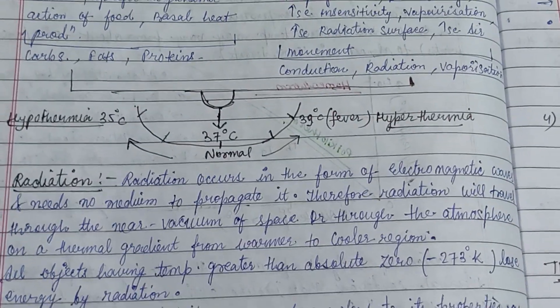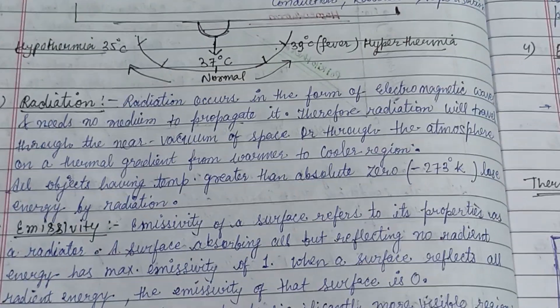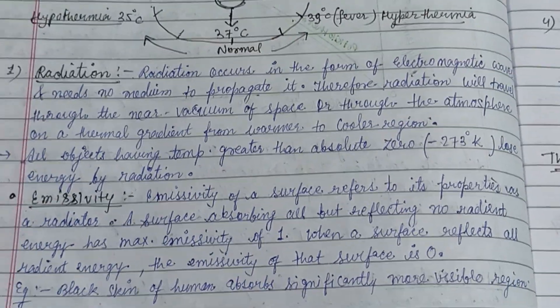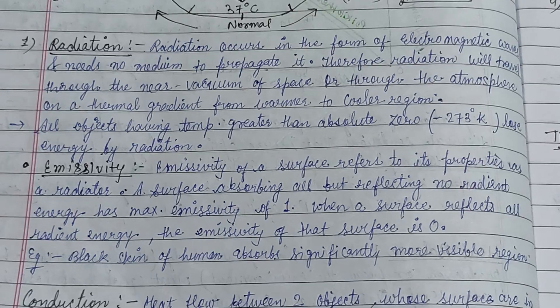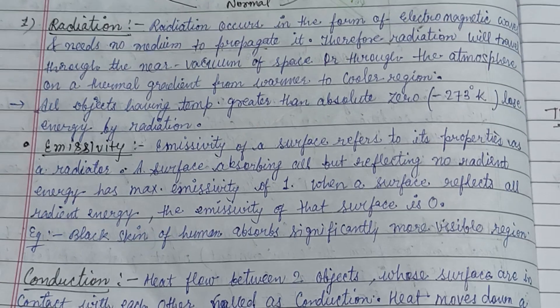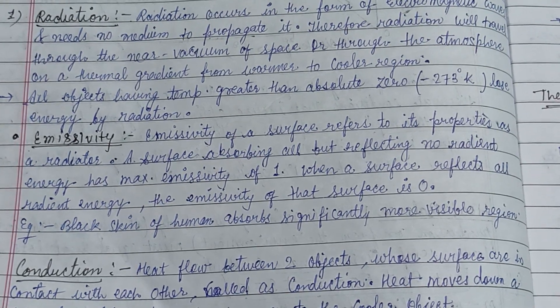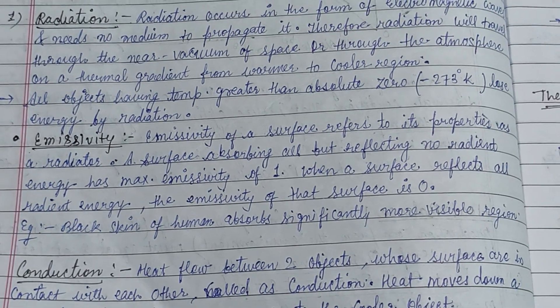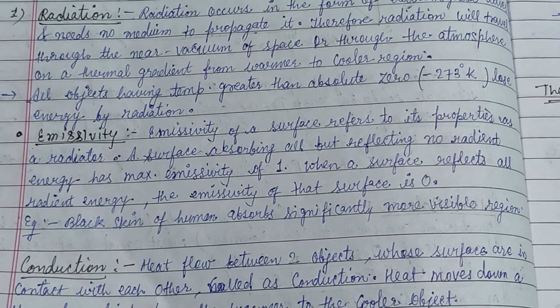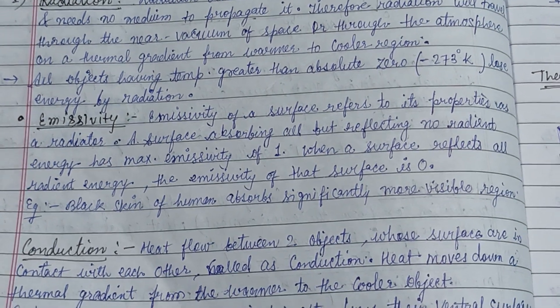Radiation occurs in the form of electromagnetic waves and needs no medium to propagate. Therefore, radiation will travel through near vacuum, space, or through the atmosphere on a thermal gradient from the warmer to the cooler region.